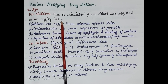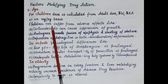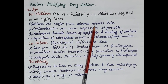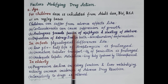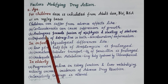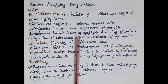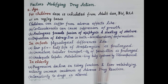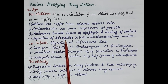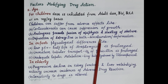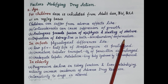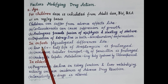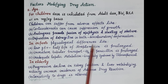Since body organs of children are not fully mature, they can suffer from adverse effects. For example, corticosteroids can cause suppression of growth; androgens can promote early fusion of epiphysis and stunting of stature. Deposition of tetracycline can occur in growing teeth, leading to discoloration and deformation of teeth.